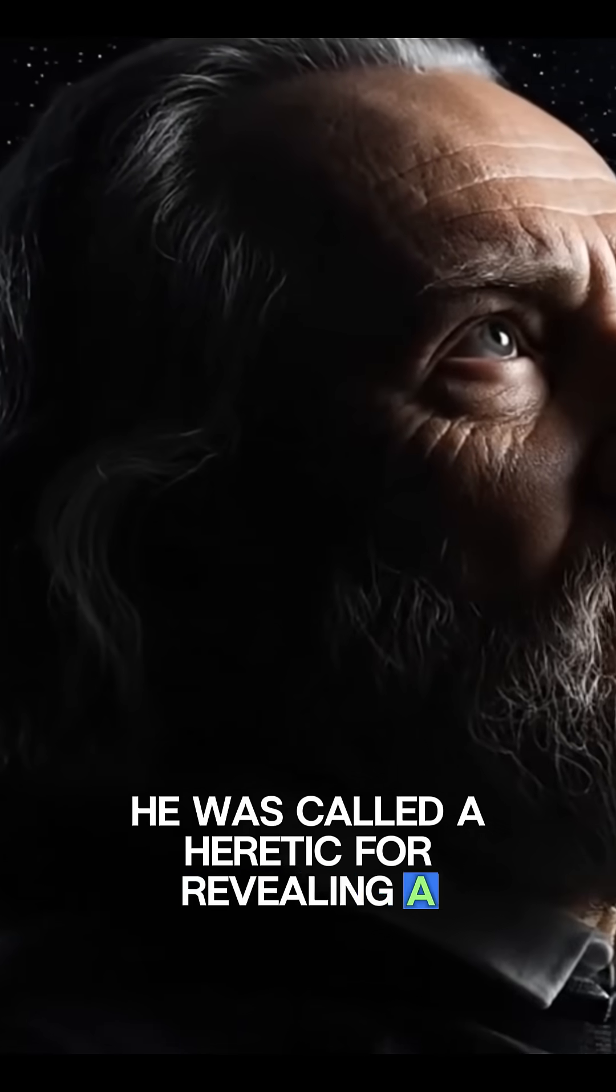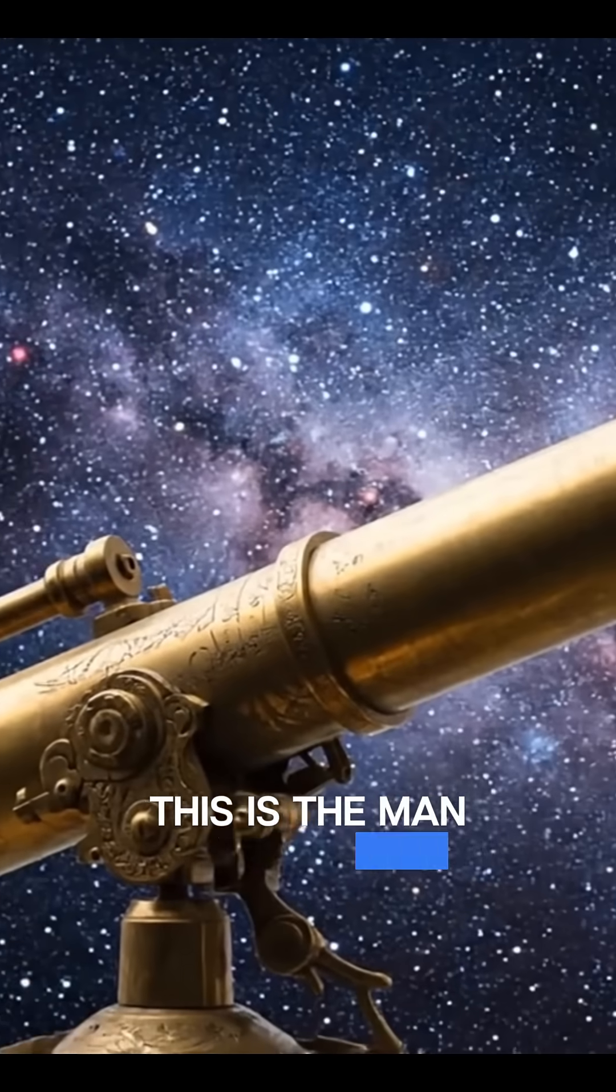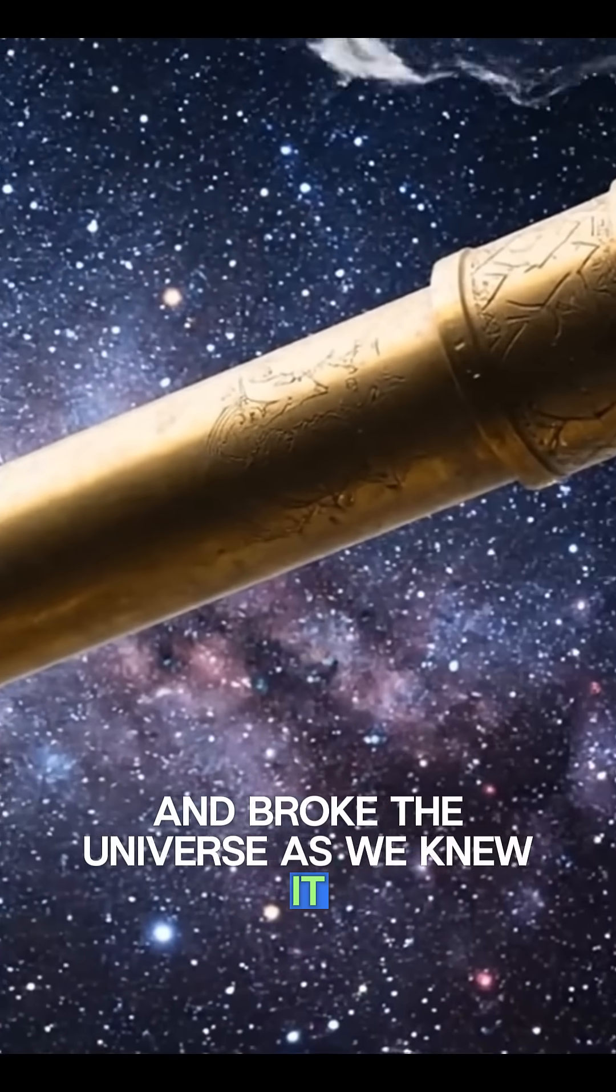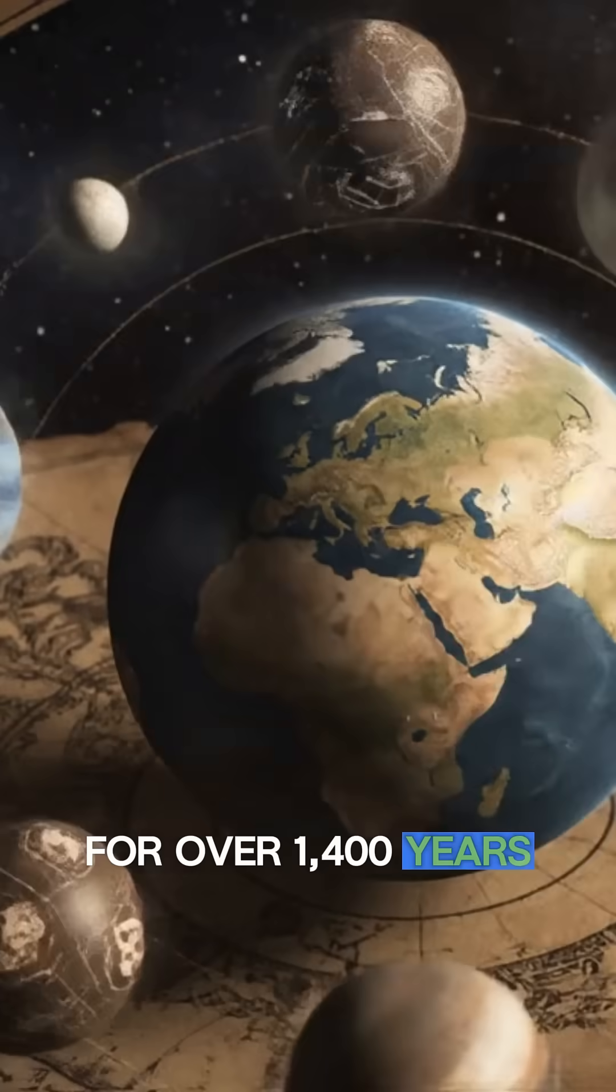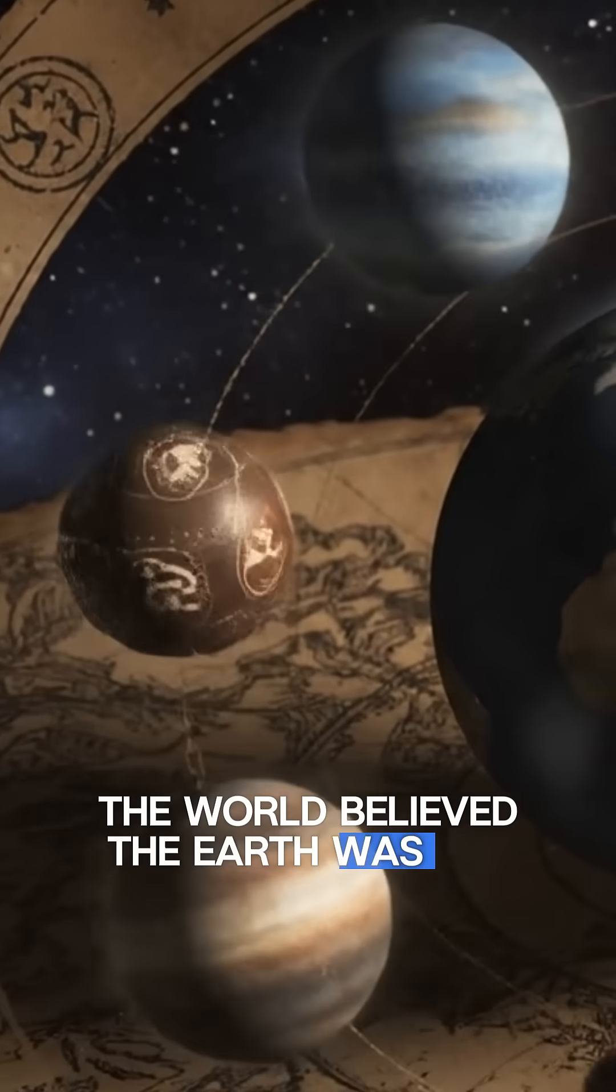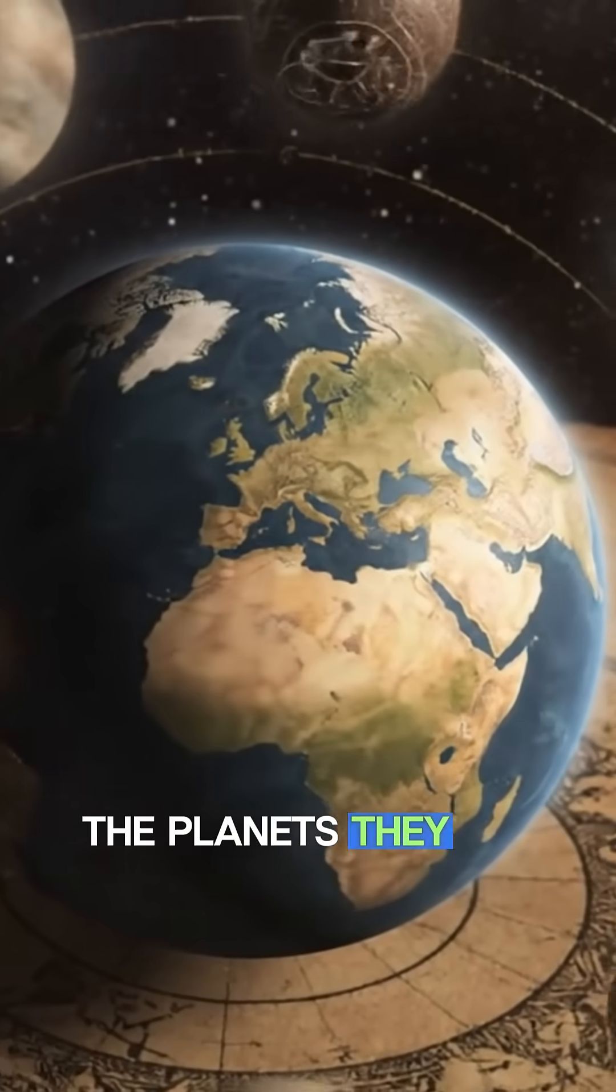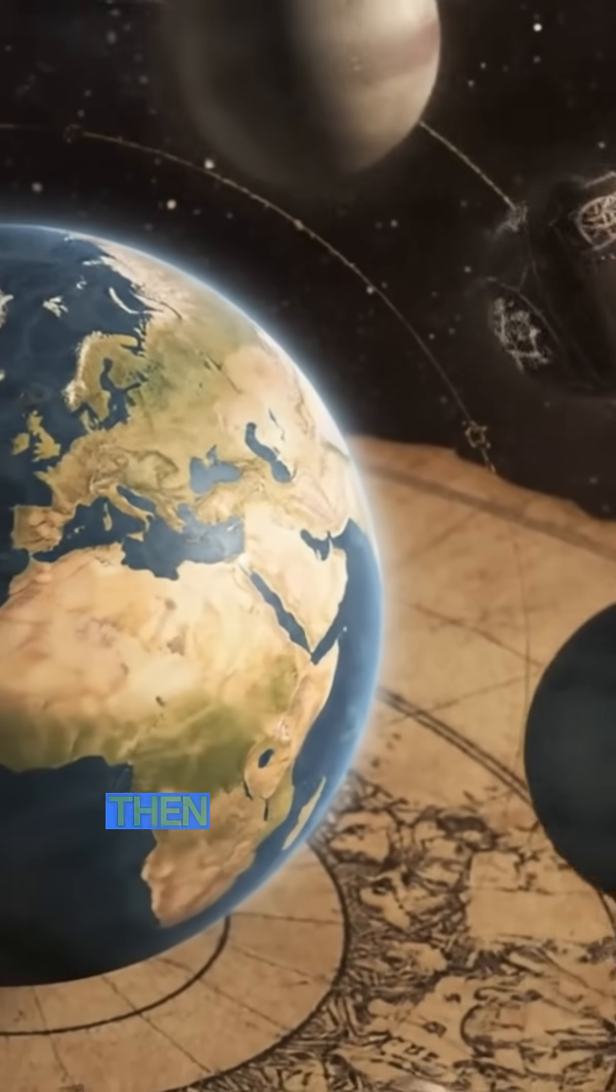He was called a heretic for revealing a cosmic truth. This is the man who pointed a telescope at the sky and broke the universe as we knew it. For over 1,400 years, the world believed the Earth was the center of everything—all the stars, the sun, the planets all revolved around us.